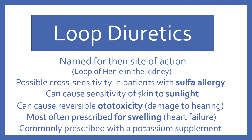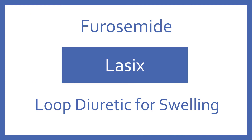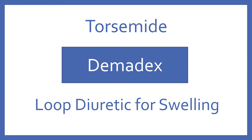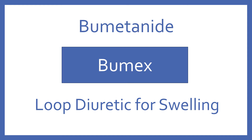Specific loop diuretics include: Furosemide, brand name Lasix, a loop diuretic for swelling. Torsemide, brand name Demadex, a loop diuretic for swelling. And bumetanide, brand name Bumex, a loop diuretic for swelling.